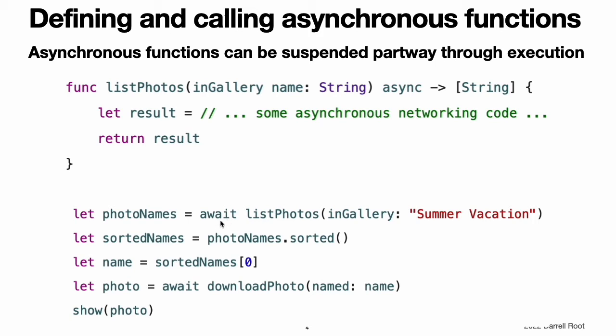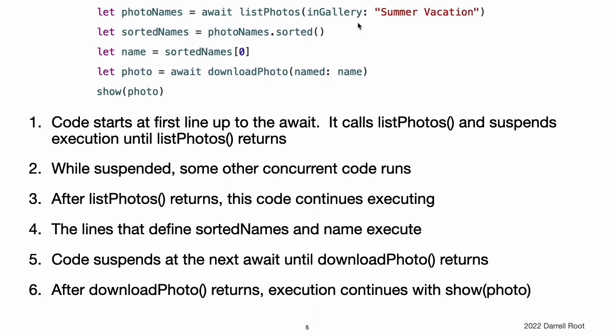For example, this code fetches the names of all pictures in a gallery and then shows the first picture. Because the listPhotosInGallery and downloadPhotoNamed functions both need to make network requests, they could take a relatively long time to complete. Making them both asynchronous by writing async before the return arrow lets the rest of the app's code keep running while this code waits for the picture to be ready. Here is one possible order of execution: the code starts running from the first line and runs up to the first await. It calls the listPhotosInGallery function and suspends execution while it waits for that function to return. While this code's execution is suspended, some other concurrent code in the same program runs. For example, maybe a long-running background task continues updating a list of new photo galleries.